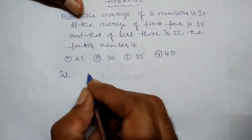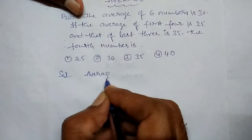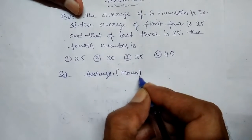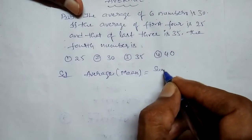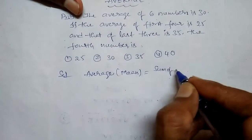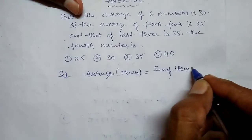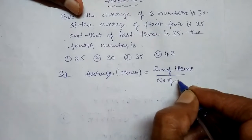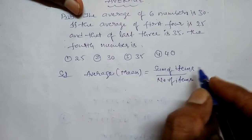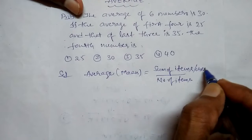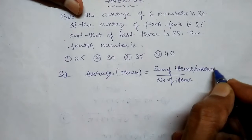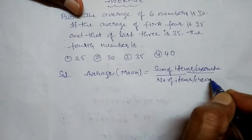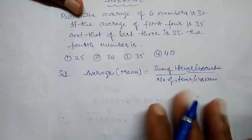The average formula is the sum of items by number of items — that is, sum of observations by number of observations. So enter the formula.